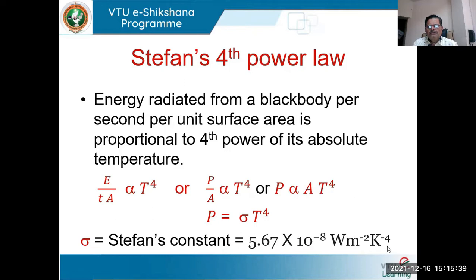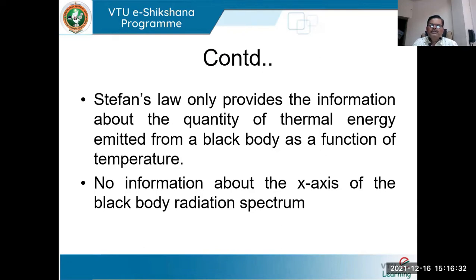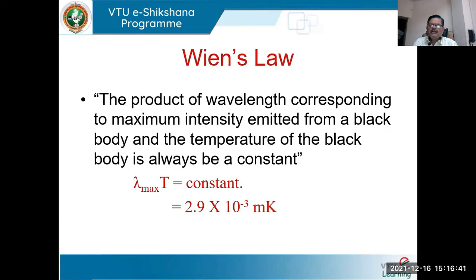What we can assess from Stefan's fourth power law is that the x-axis of the radiation spectrum has not been explained. Instead, the y-axis has been explained. That means if you heat a black body to temperature T1, you can plot a radiation curve and the area bounded by that curve gives the energy radiated per second per surface area, i.e., the intensity. Stefan's law has not explained any particular information about the wavelength axis of the radiation spectrum.